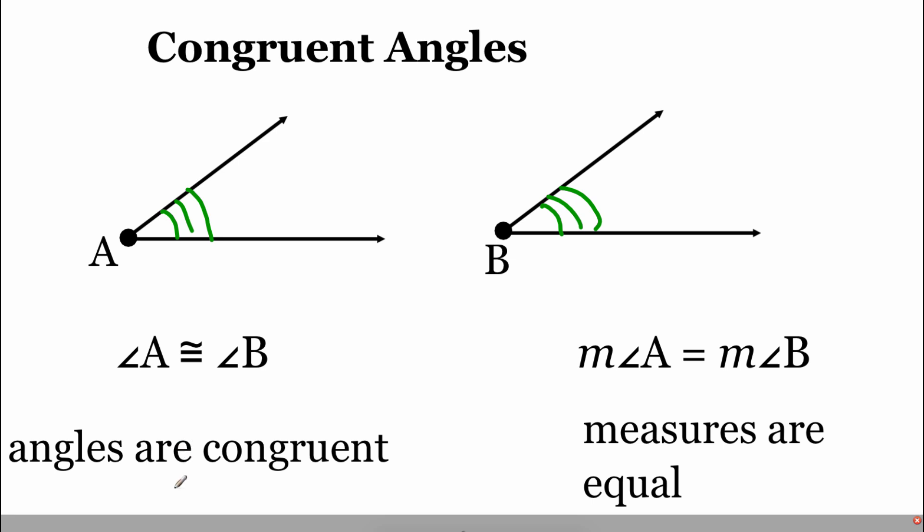The angles themselves are congruent. But as soon as we start talking about how big they are, what their measures are, then we have to use this idea of being equal. They're related ideas, but the shape itself, the angle itself, we would say those things are congruent. But if we're talking numbers and measures, those things are equal.